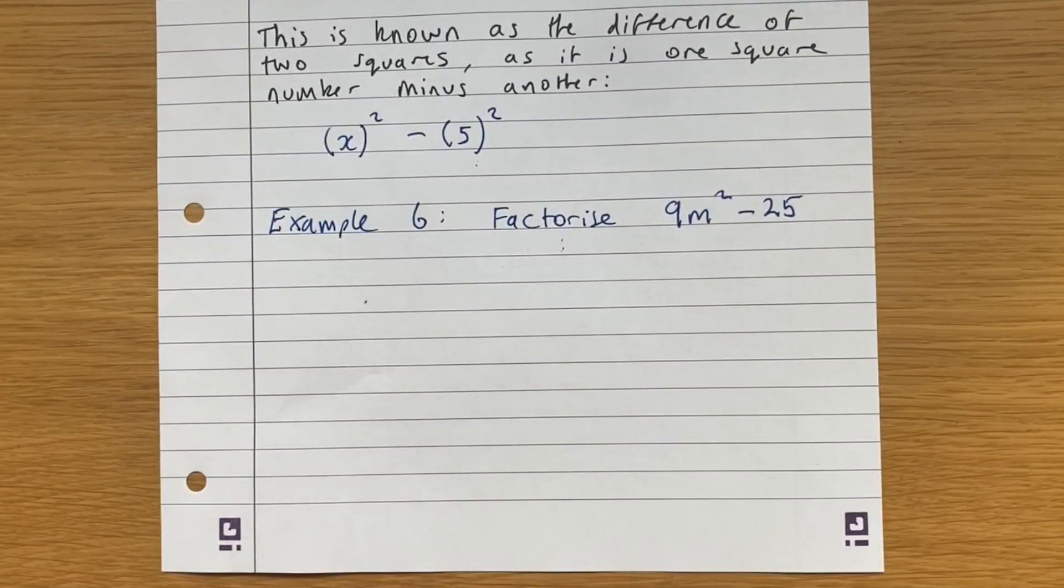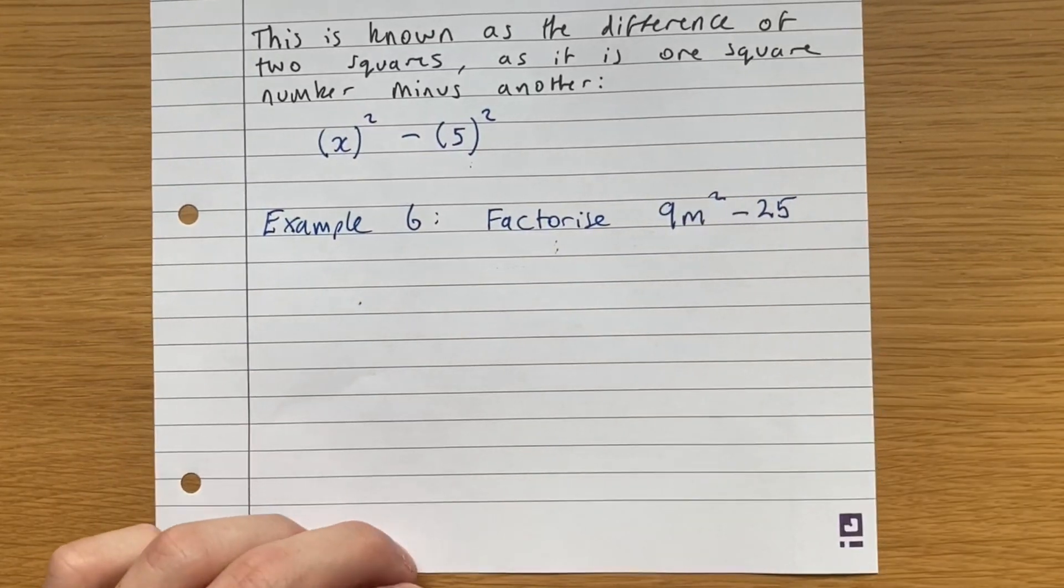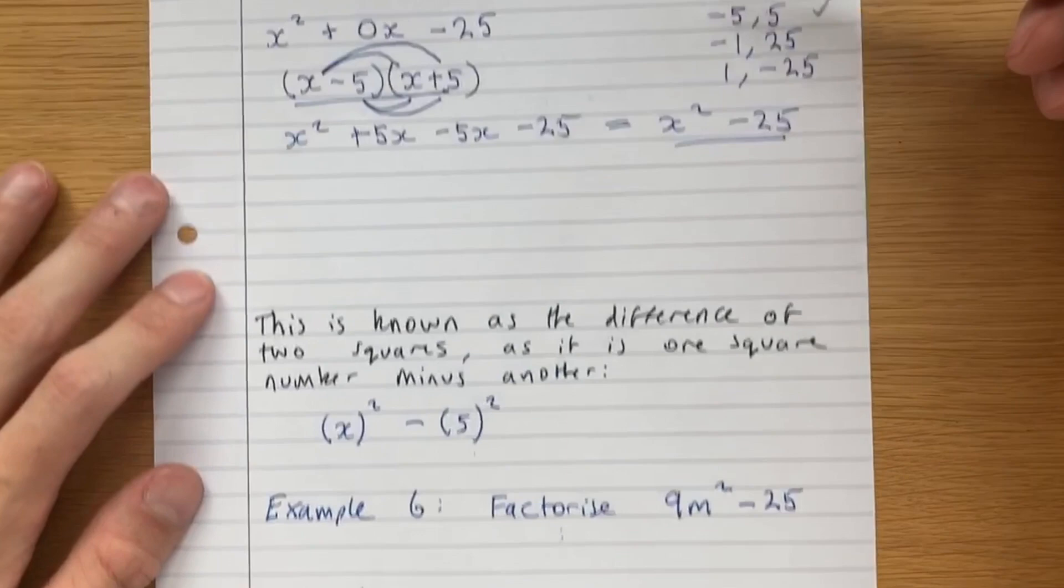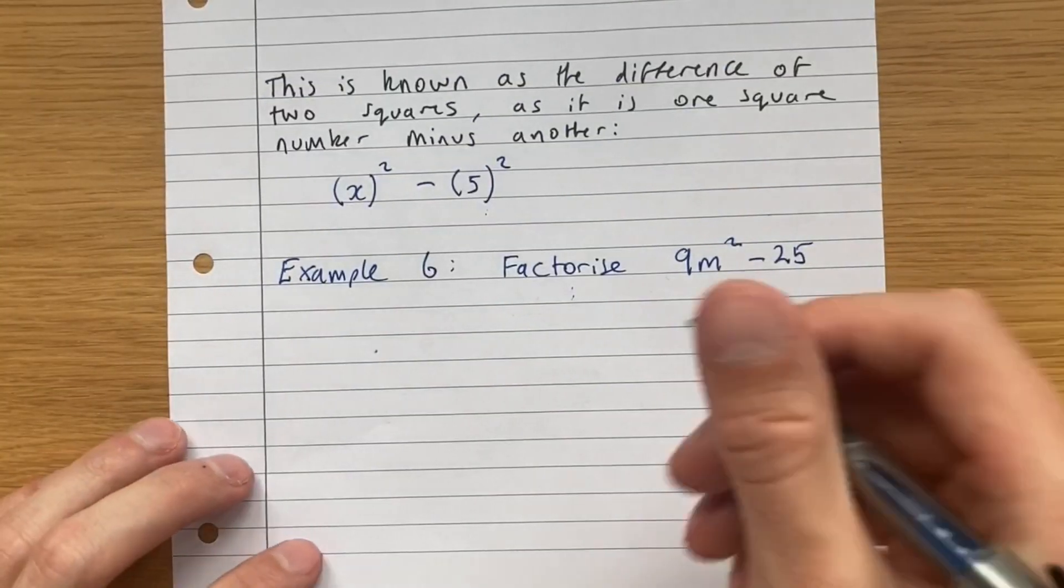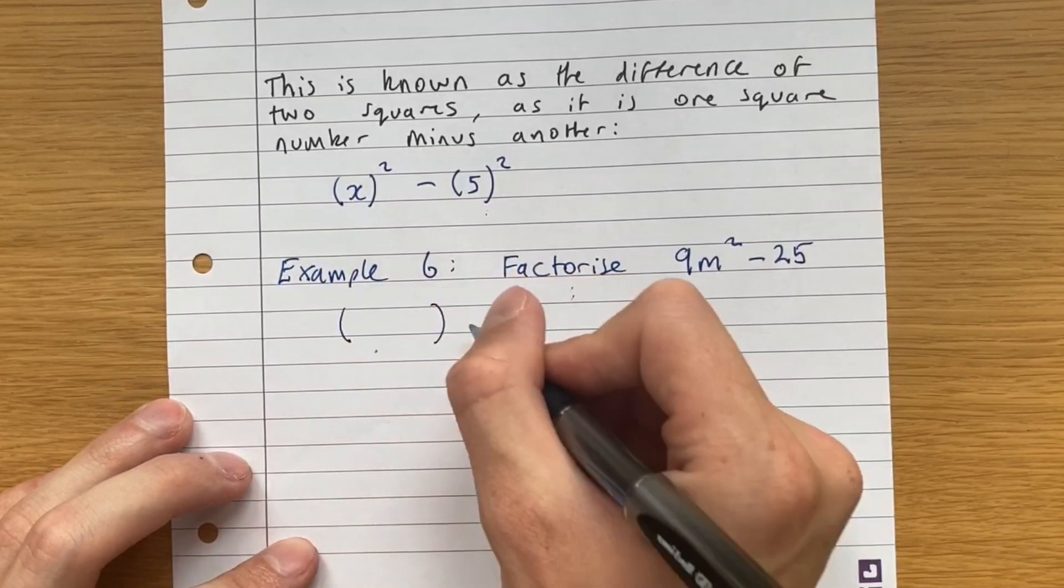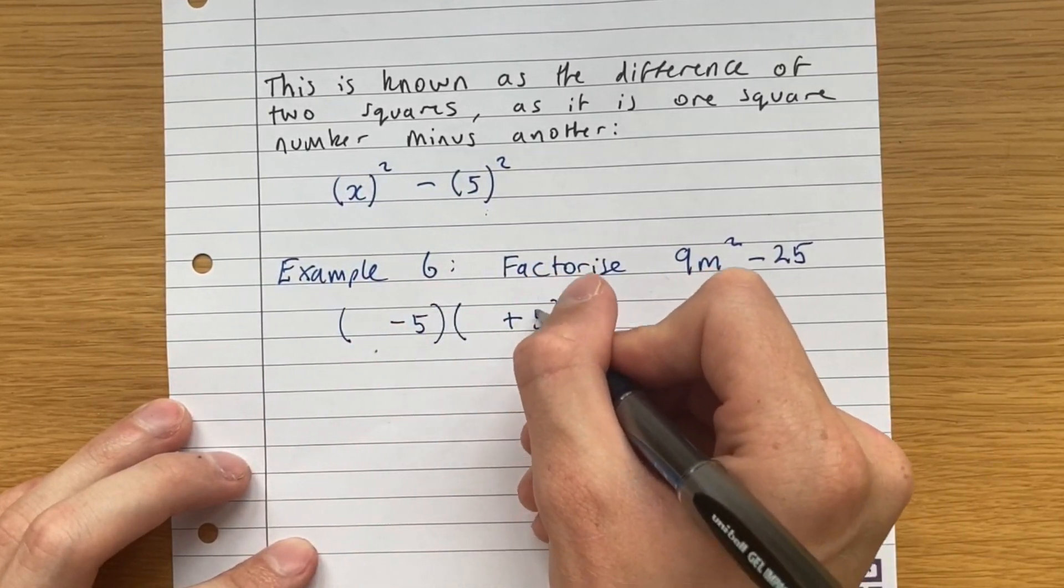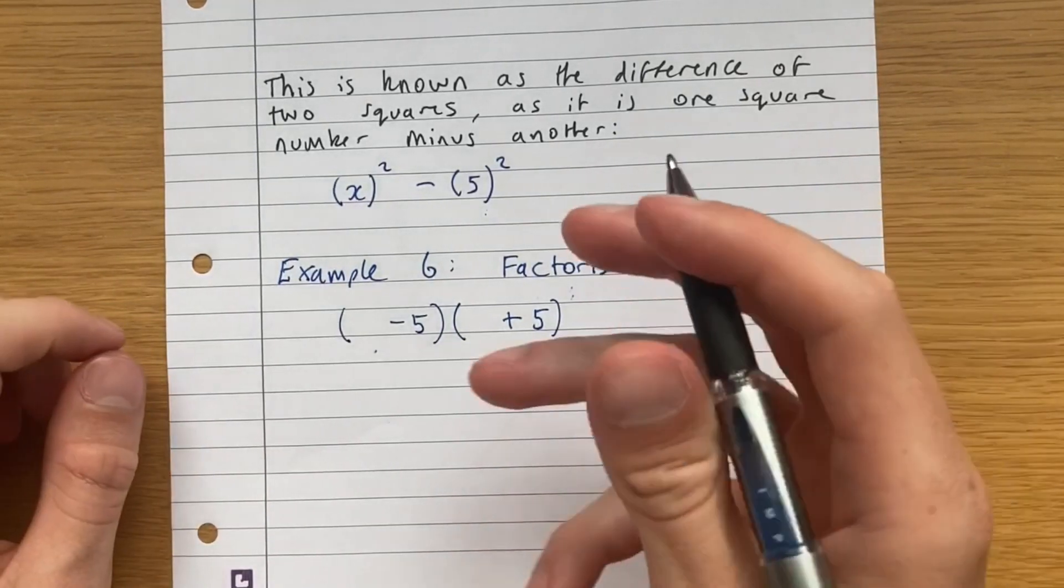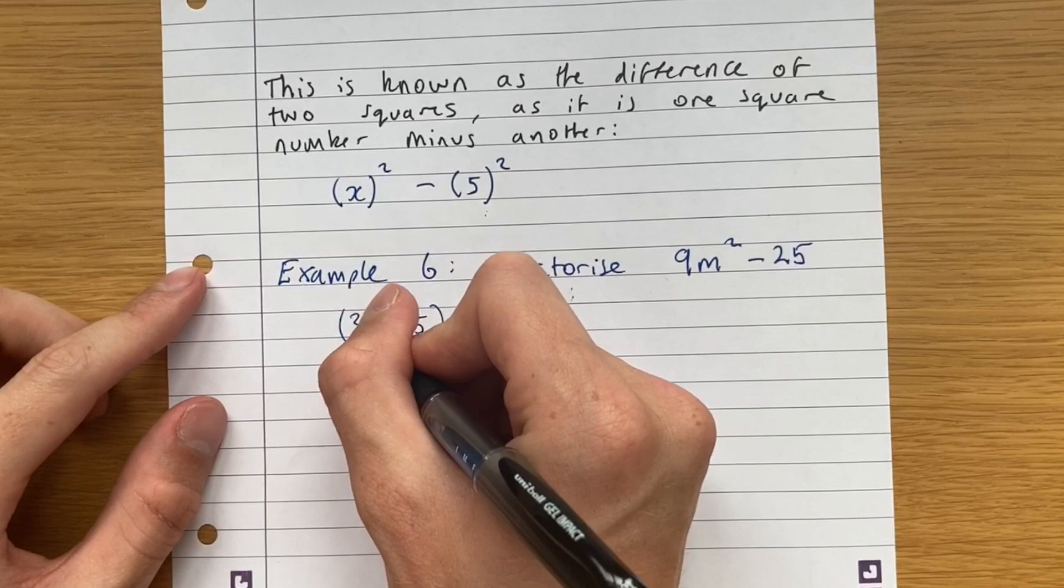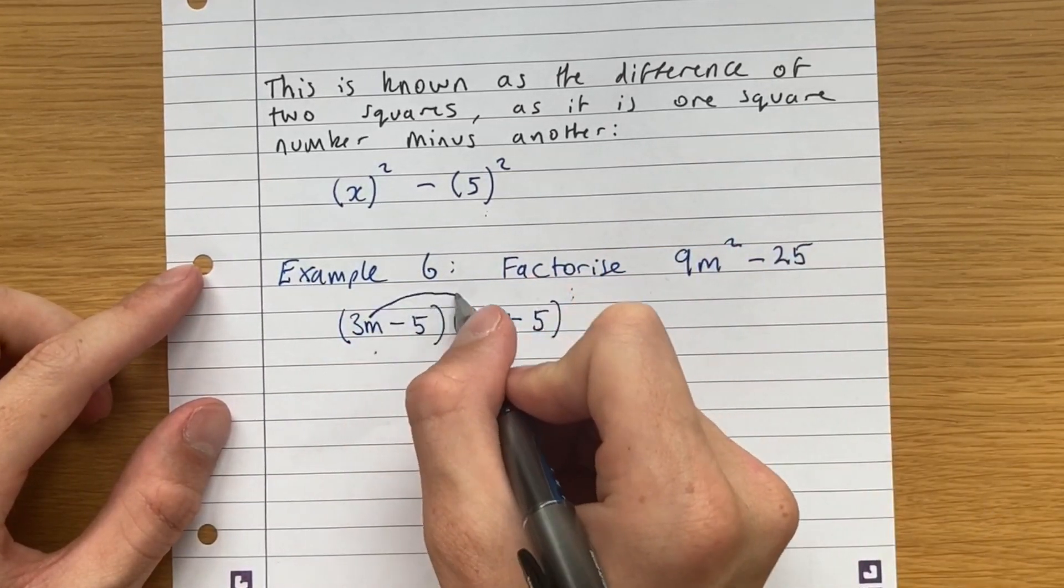So here, we're asked to factorise 9m squared minus 25. A bit different here. We have a number in front of the square term. But what we can notice is this looks awfully similar to just x squared plus 25. So we can almost immediately tell that it's going to be something minus 5, something plus 5. So now we just need to think, how can we get our 9 in front of the m squared? Well, if we just put a 3 instead of just a singular m,